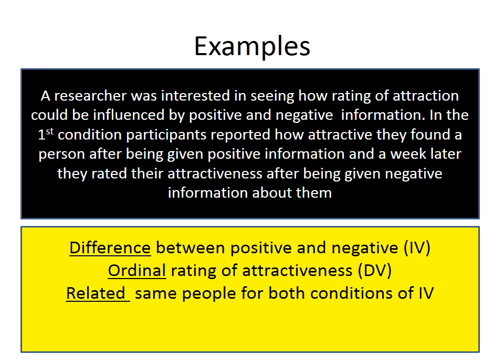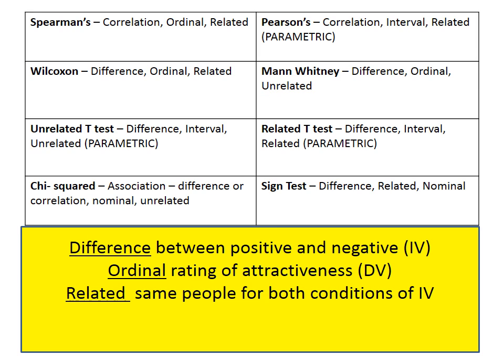Going back to the research scenario, the researcher is looking for a difference — not a correlation — between scores in the positive and negative conditions. The same group of people are used in both conditions, so it's a related design, i.e. repeated measures. Ratings of attractiveness are the dependent variable, and that's ordinal level data. Looking at our eight tests, hopefully you can spot Wilcoxon — a test for difference with ordinal data in a related design. Be very careful: a classic student mistake is saying the data was interval instead of ordinal, which would incorrectly lead you to the related t-test.